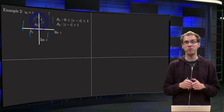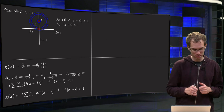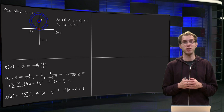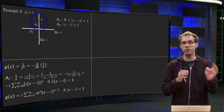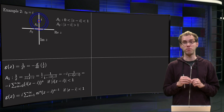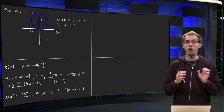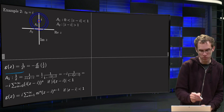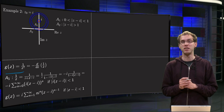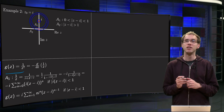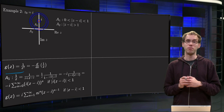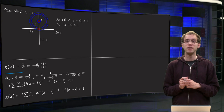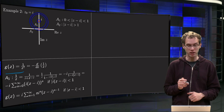Expanding 1/z² is awkward because we don't want to handle a product of series if we can avoid it. Fortunately, we have a trick: g(z) = 1/z² is the derivative of −1/z (up to sign). So we find the power series of 1/z first, then differentiate to get 1/z², which is much easier.